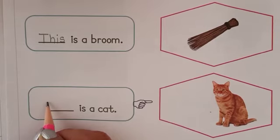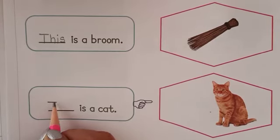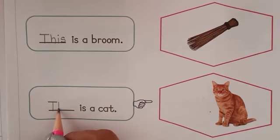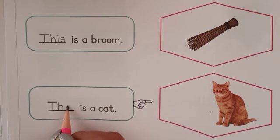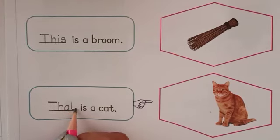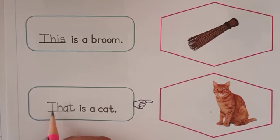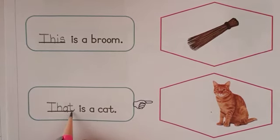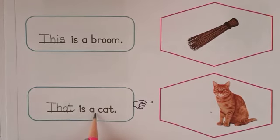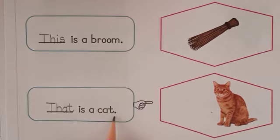First we will write capital T: sleeping line and standing line. For H: standing line, go up, make a curve and come down. For A: C curve, go up and come down in a standing line. For T: standing line, make a curve and short sleeping line. T-H-A-T, that. That is a CAT. Full stop.